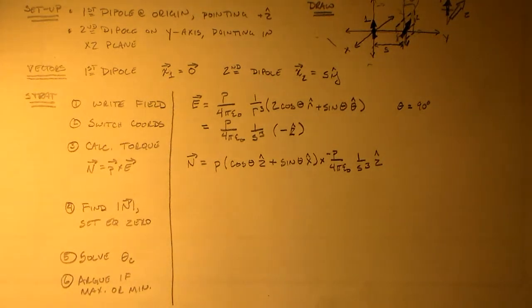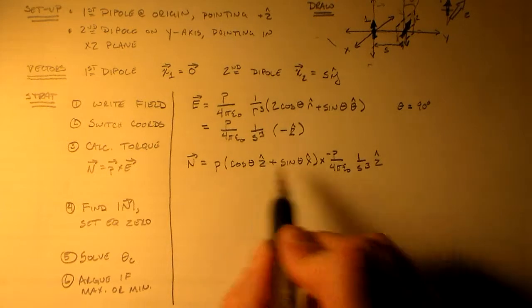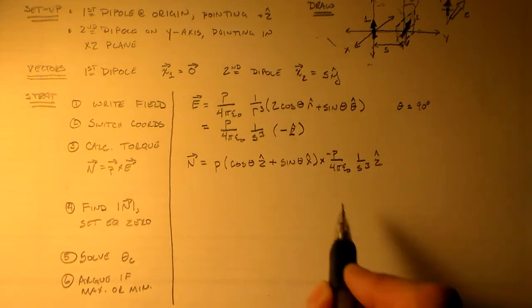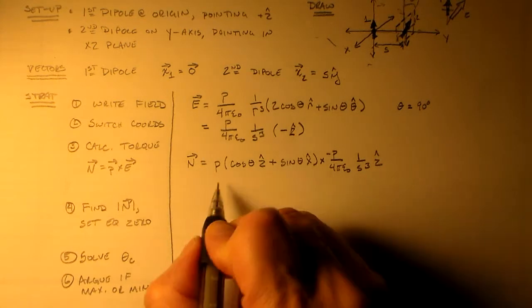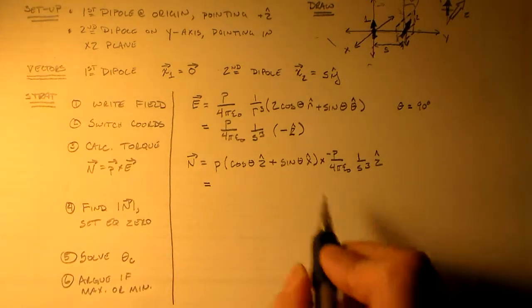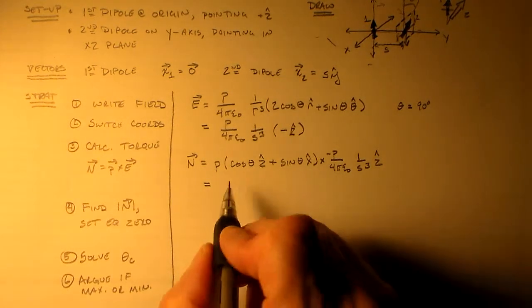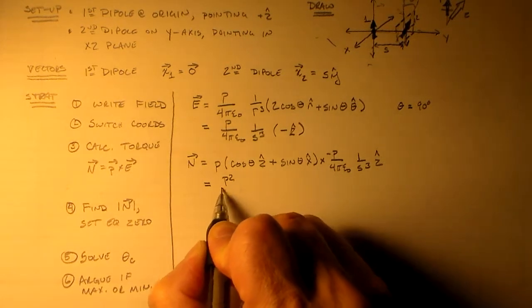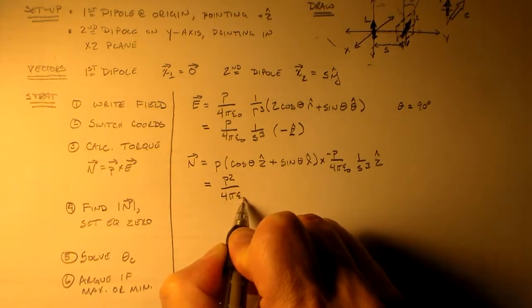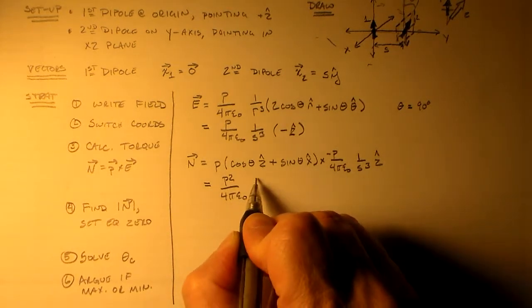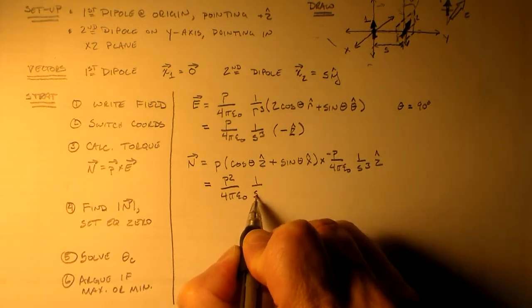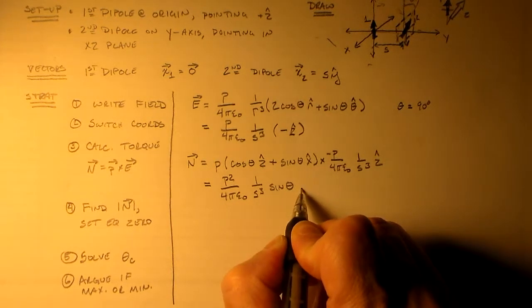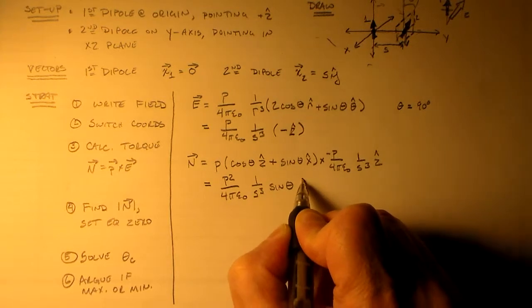So that's a really nice and easy cross product, because this is zero, z cross z is zero, and x cross z is minus 1, because that's anti-cyclic. So we end up with p squared over 4 pi epsilon naught, 1 over s cubed times sine theta in the y hat direction.